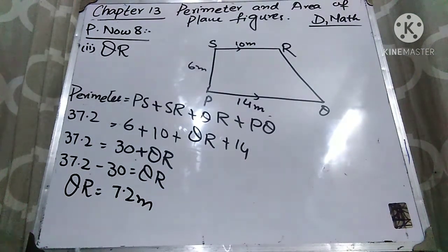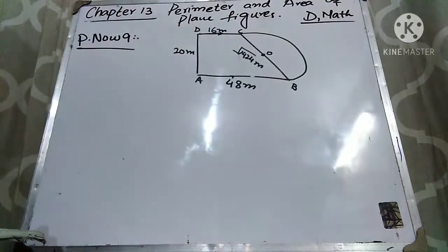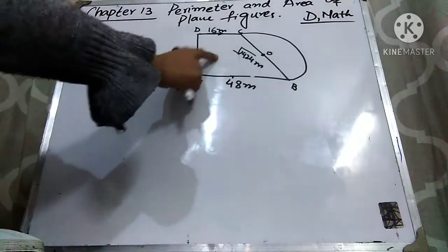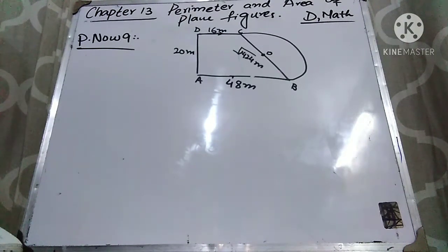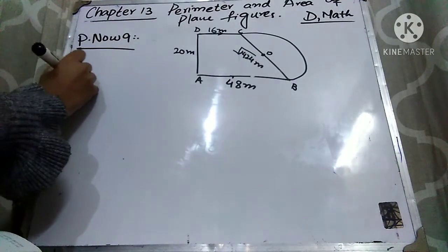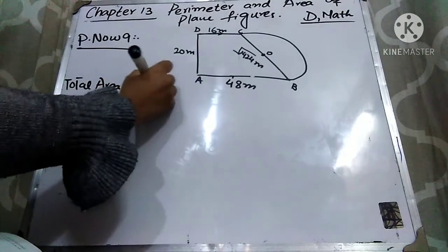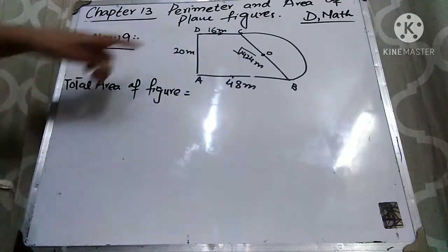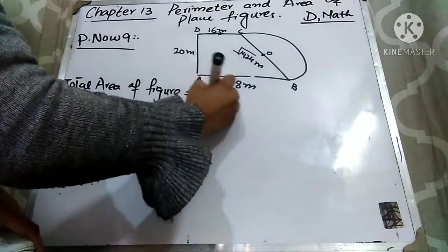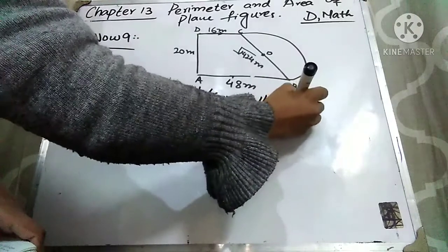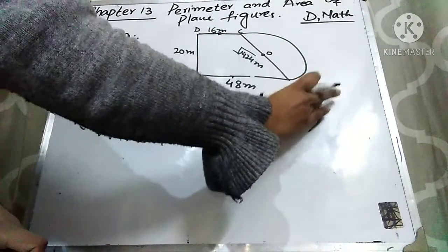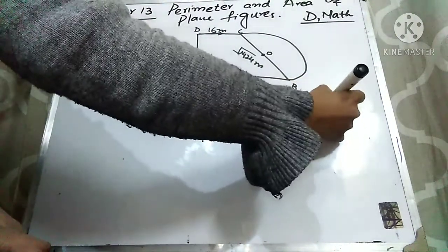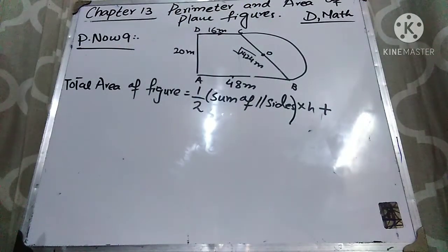Practice 9: A figure is made up of trapezium ABCD and a semicircle BOC. BC is the diameter of the semicircle with center O. AB is equal to 48 meters, CD is equal to 16 meters, AD is equal to 20 meters, and BC is equal to root 1424 meters. We have to find out the area of the whole figure. This figure contains two shapes: a trapezium and a semicircle.